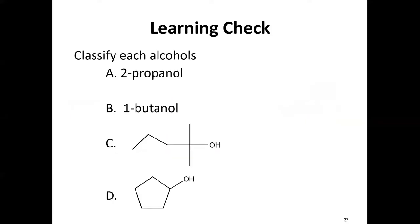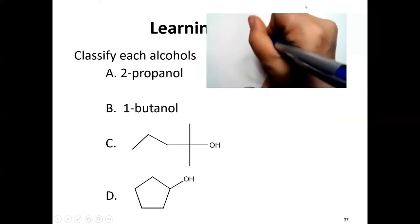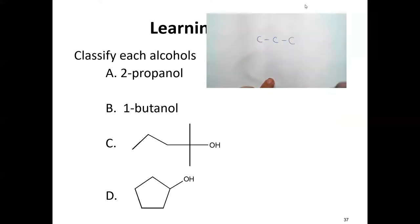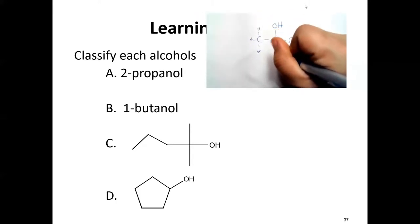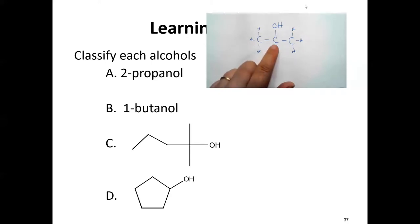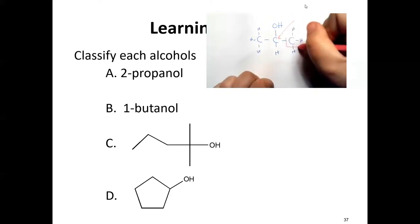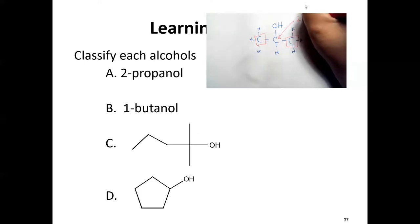Let's classify some examples. First, 2-propanol: three carbons, with the OH on carbon two. Filling in with hydrogens so carbon has four bonds, we focus on the carbon with the OH — it has two carbons attached to it, so this is a secondary alcohol.